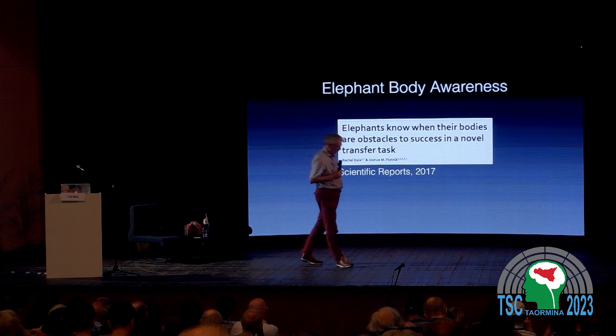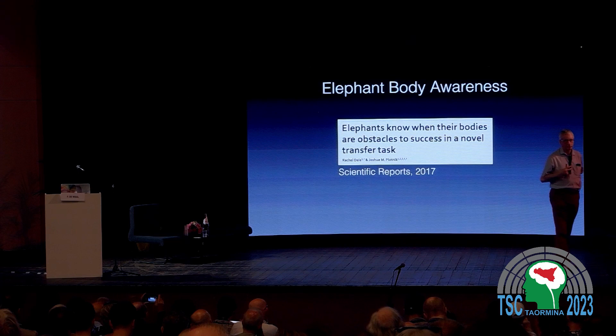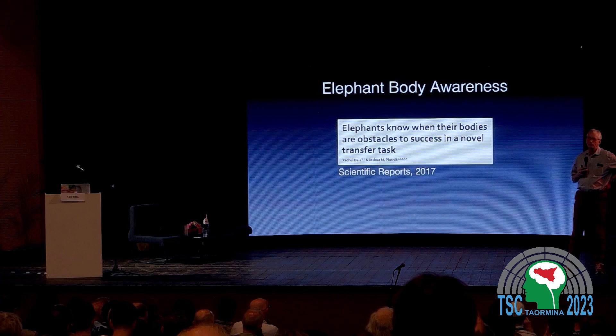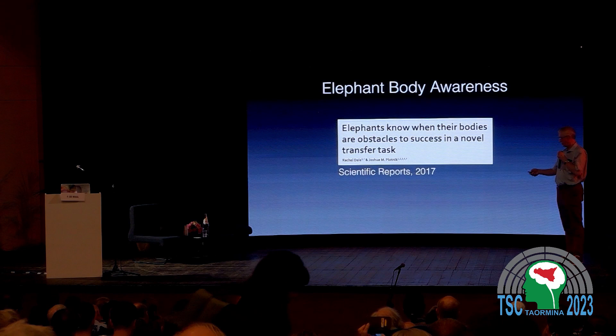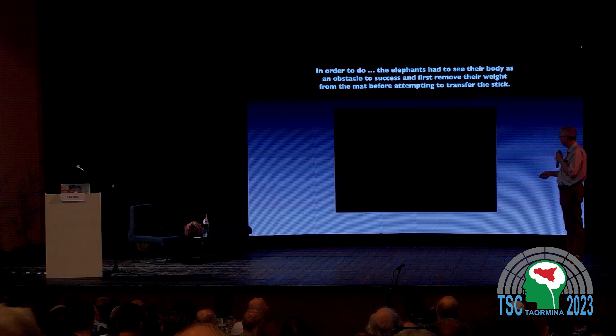One thing we're doing now is trying to develop different tests beyond the mirror test, because the mirror test is very visual — it wouldn't work well for a dog or a rat. It is very limiting. So we now have different tests to see how aware animals are of their own bodies.